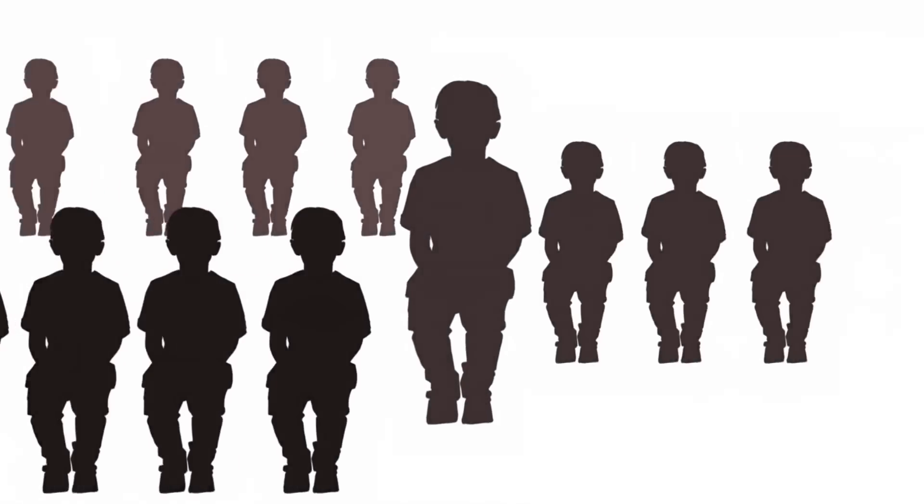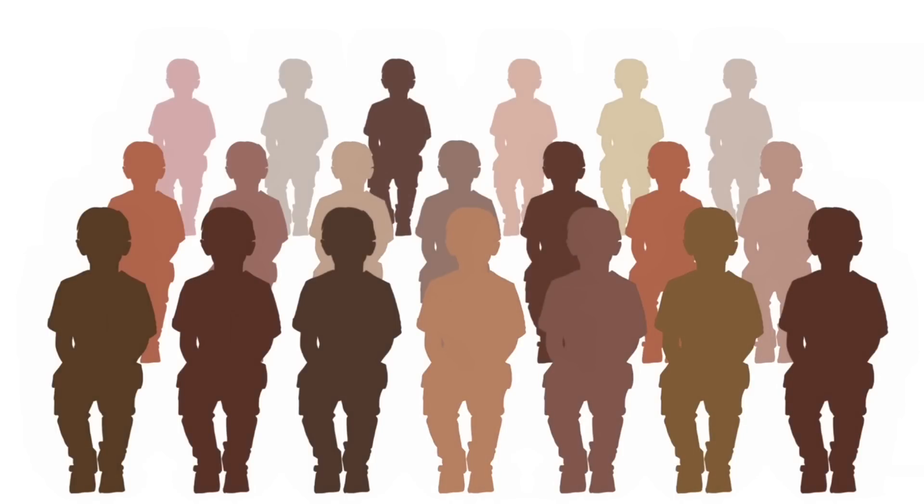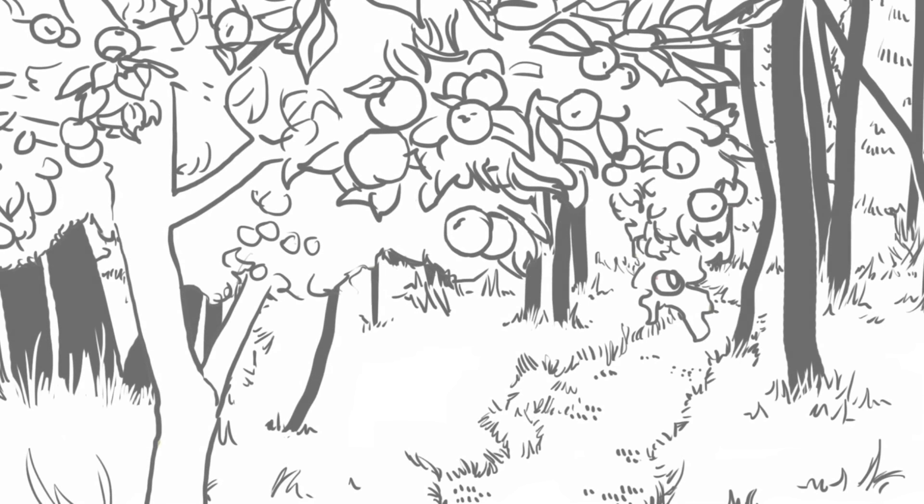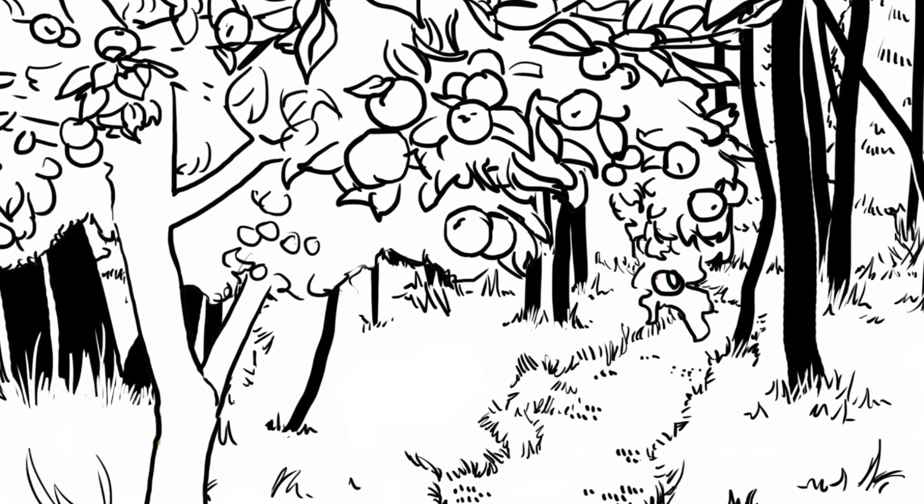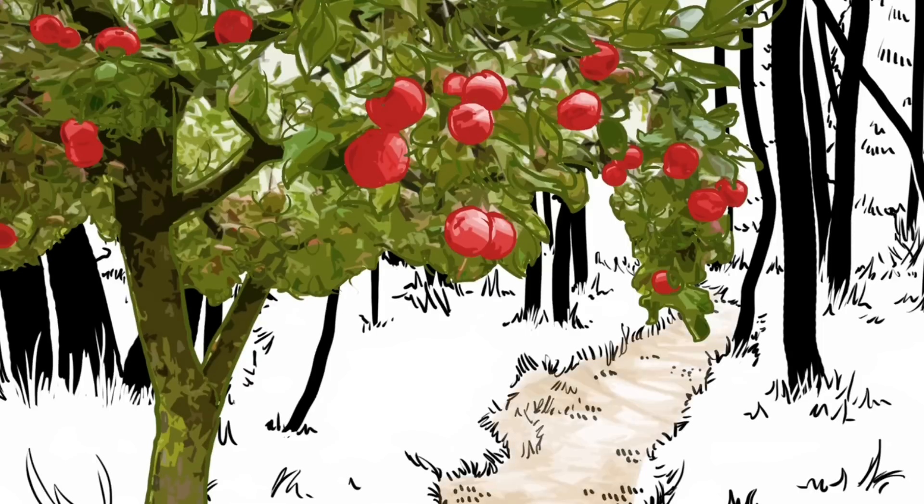Children start projecting racial differences as early as four years old. When told a story about a child at school, children remember the classmate's race more often than other characteristics, including their gender. Why do humans do this? We use visible similarities for lots of important decisions. What to eat, where to walk, etc.